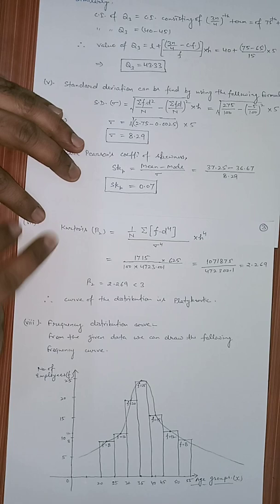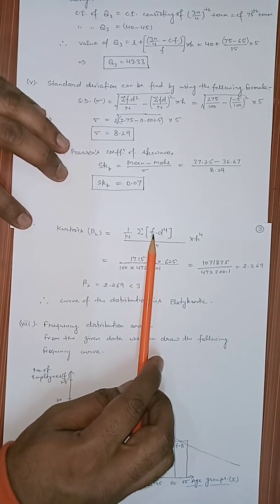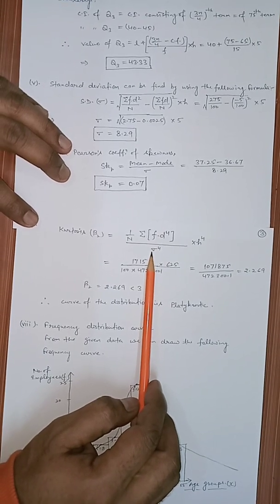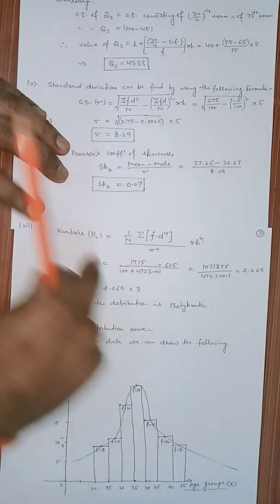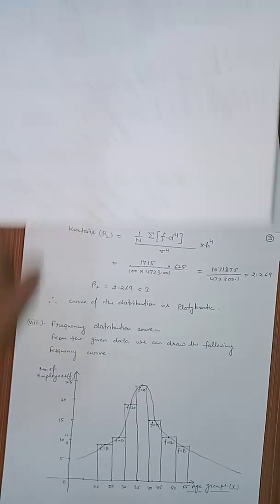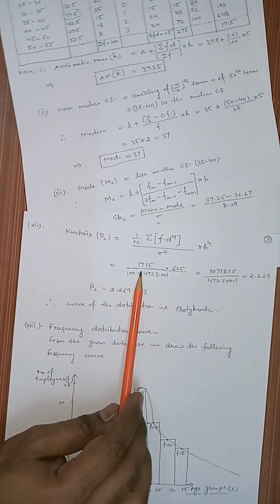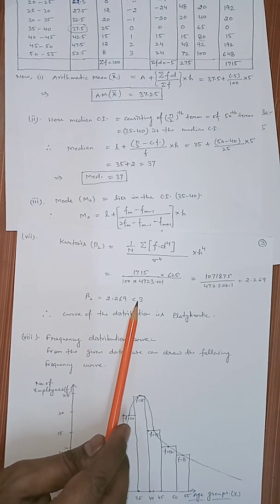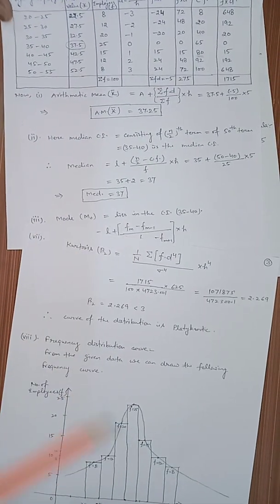Next is kurtosis, denoted by β₂. When step deviation method is applied, the formula is: β₂ = [Σf·d⁴ / (n × σ⁴ × h⁴)]. The value of Σf·d⁴ from the table is 1715. Putting in the values, β₂ = 2.269. Since β₂ is less than 3, the distribution is platykurtic, meaning the curve would be flatter in shape.